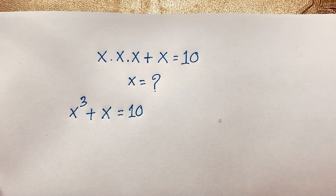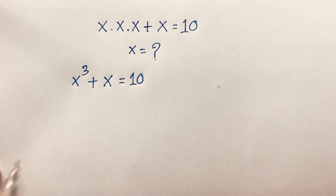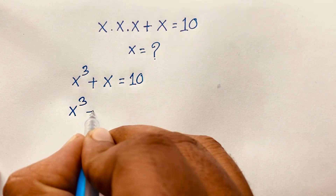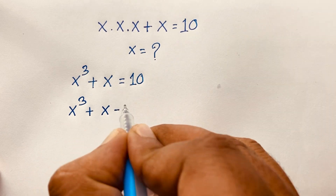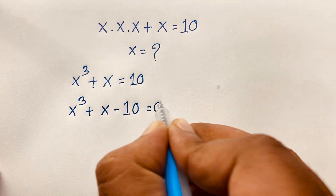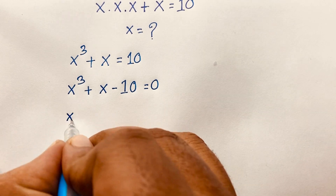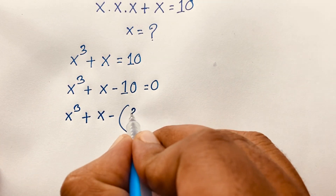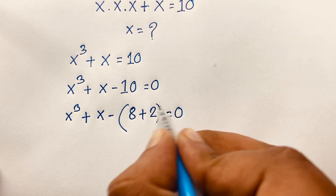But how to solve this question algebraically? This expression x to the power 3 plus x, if I move the 10 to this side, it will be x to the power 3 plus x minus 10 is equal to 0. Here x³ + x - 10 equals 8 + 2 equals 0.